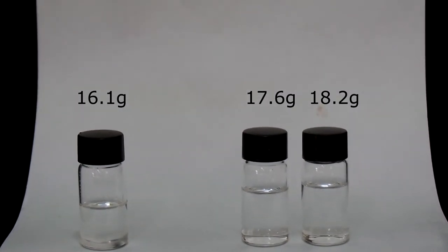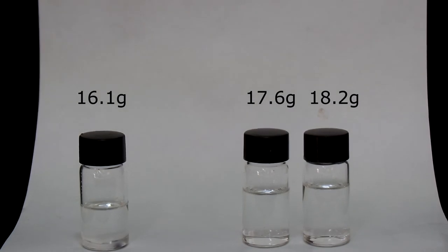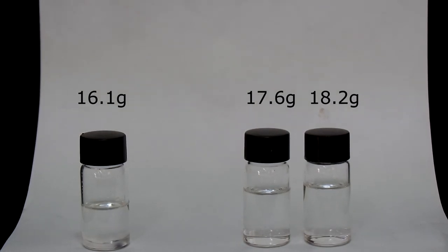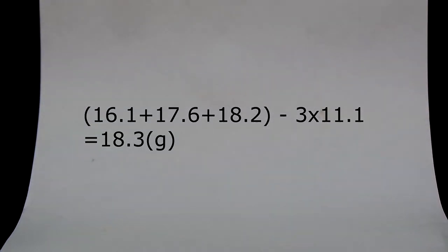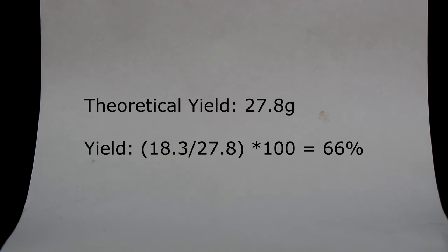By measuring the weight of each vial from the left, we got 16.1, 17.6, and 18.2 grams. The weight of each vial itself was 11.1 grams per each, so we got a total of 18.3 grams of butyl acetate. The theoretical yield is 27.8 grams, so we got a yield of about 66%.